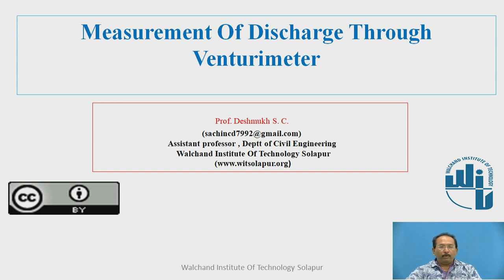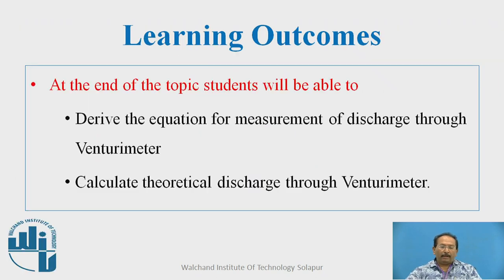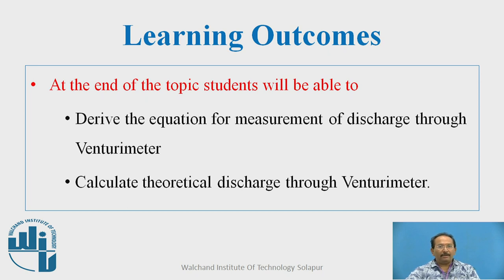Particularly, we are going to derive the equation to find the discharge through a venturimeter. You know that a venturimeter is one of the most important applications of Bernoulli's theorem. Bernoulli's theorem states that pressure, potential, and kinetic energy at section 1 is equal to pressure, potential, and kinetic energy at section 2.